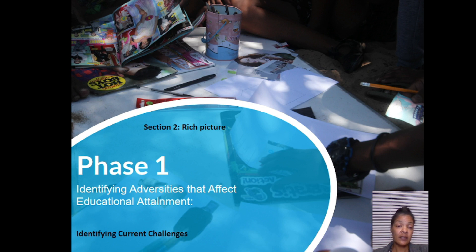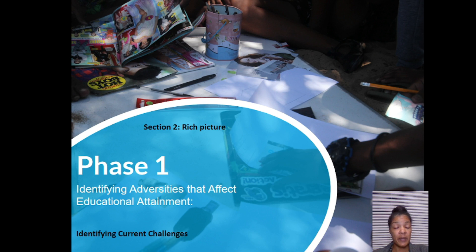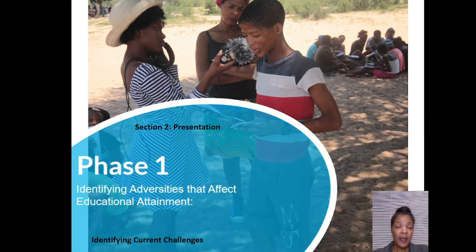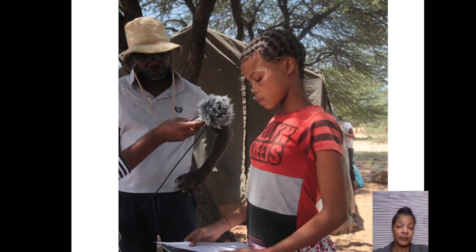In the second section, a rich picture strategy was used to investigate and describe topics visually in order to construct early mental models that facilitated open discussion. The students were divided into groups of five and tasked to graphically express their current issues. Individual group conversations were then held, followed by brief presentations of the rich images.